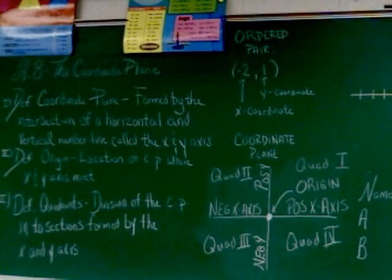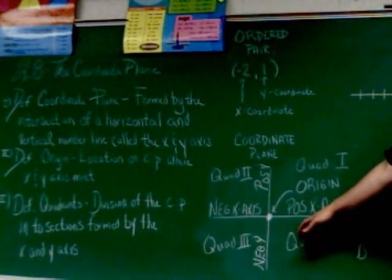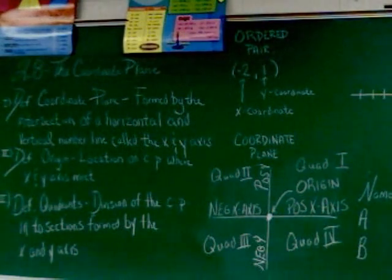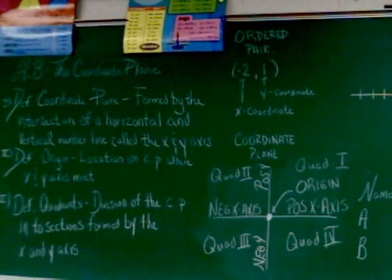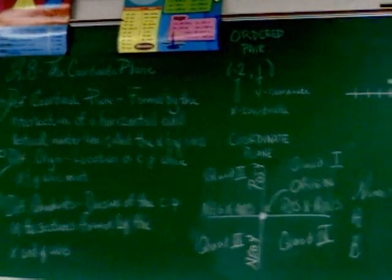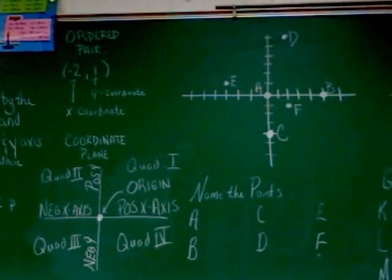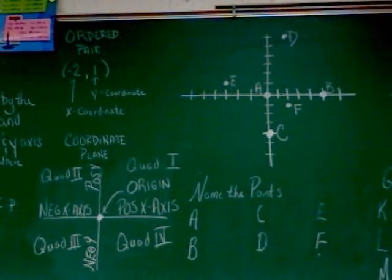For instance, if I gave you a point and said it was down here, you would just tell me it's in quadrant four. That's the primary use of quadrants just as an identifier.